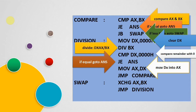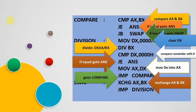Otherwise, we move the remainder from DX into AX. Then we do the comparison again — if the first number is less than the second we swap again. Swapping is done using the XCHG instruction, which exchanges AX and BX so that AX and BX get swapped. Then we go back to the division step and perform division again.